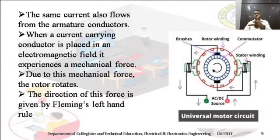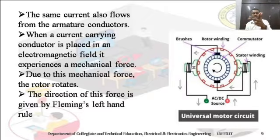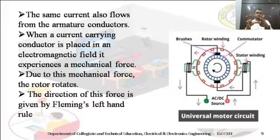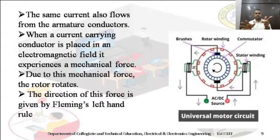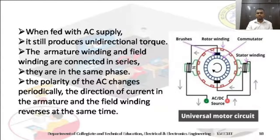The direction of this mechanical force is given by Fleming's left-hand rule. The thumb indicates the direction of rotation (motion), the forefinger indicates the direction of flux, and the middle finger indicates the direction of current. The three fingers must be perpendicular to each other at 90 degrees. So the direction of the force in the universal motor is determined by Fleming's left-hand rule.